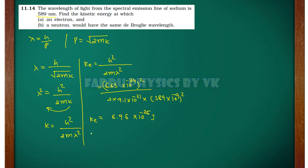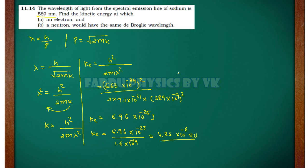If you convert this into electron volts, divide 6.96 × 10⁻²⁵ by 1.6 × 10⁻¹⁹. Simplifying this, the result will be 4.35 × 10⁻⁶ electron volts. So this will be the solution for the electron.